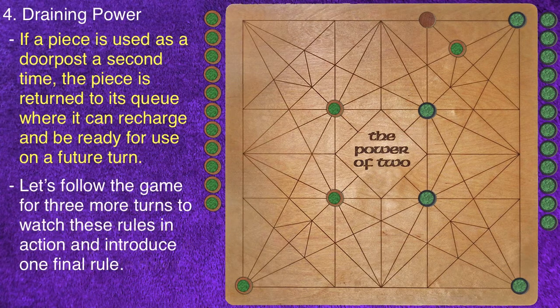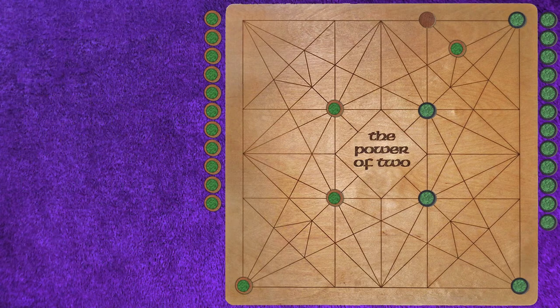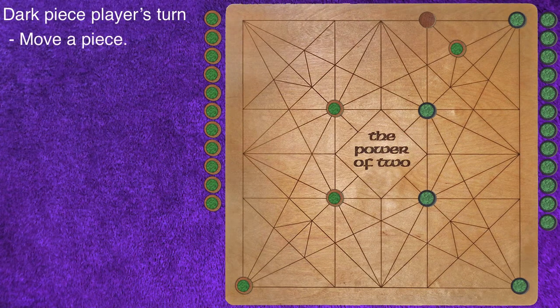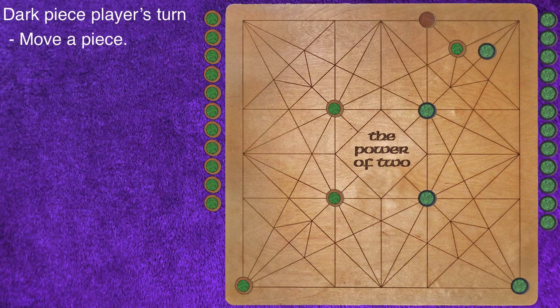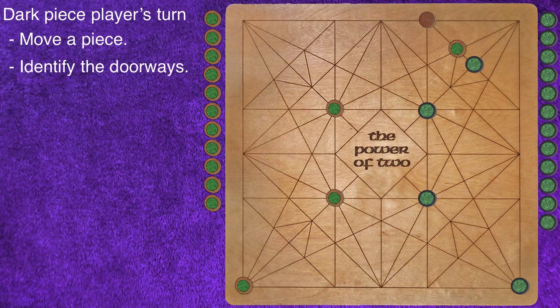Let's follow the game for three more turns to watch these rules in action and to introduce one final rule. It is now the dark piece player's turn. The player's first step is to move a piece. Next, we identify the doorways that were created.